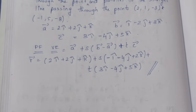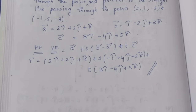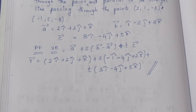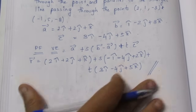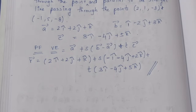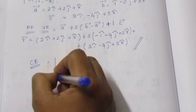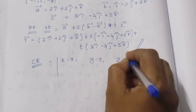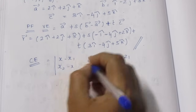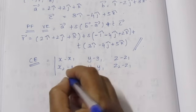Next we have to find the Cartesian equation. This is a longer process. We need to use the determinant form involving x2 minus x1, y2 minus y1, z2 minus z1, and direction ratios c1, c2, c3.